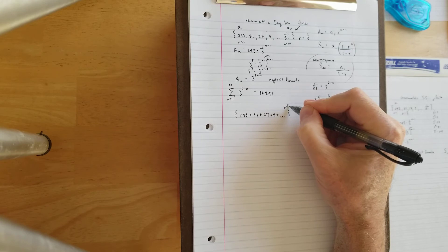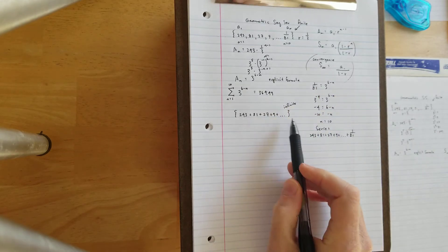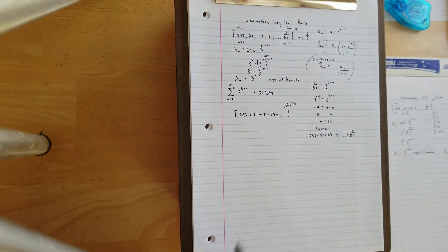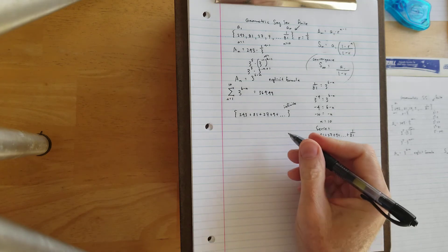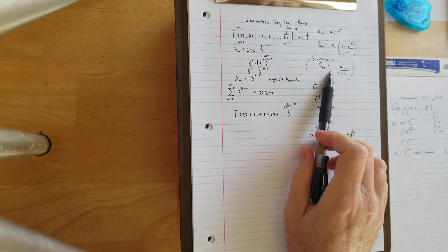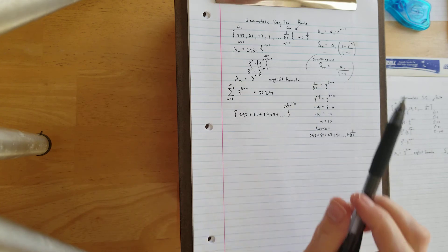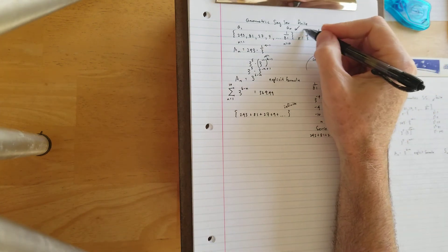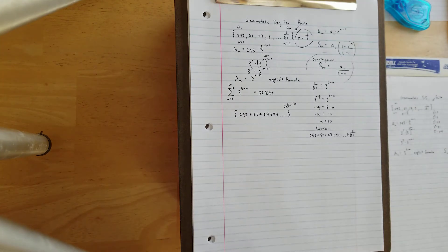And it's infinite because we don't have a last term. We don't know where it ends. When that happens, believe it or not, we actually do still have a sum, but only because the R value happens to be a fraction, absolute value fraction less than 1.